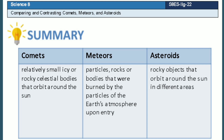In summary, comets are relatively small icy or rocky celestial bodies that orbit around the sun. Meteors are particles, rocks, or bodies that were burned by the particles of the Earth's atmosphere upon entry, creating a visible ray of light. Asteroids are rocky objects that orbit the sun in different areas and are not visible to the naked eye.